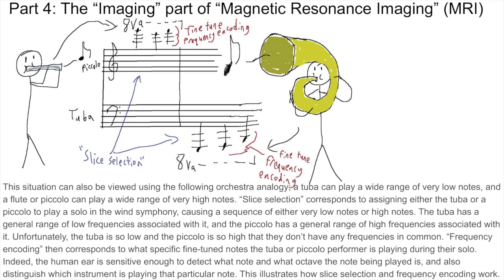This situation can also be viewed using the following orchestra analogy. A tuba can play a wide range of very low notes, and a flute or piccolo can play a wide range of very high notes. Slice selection corresponds to assigning either the tuba or a piccolo to play a solo in the wind symphony, causing a sequence of either very low notes or high notes. The tuba has a general range of low frequencies associated with it, and the piccolo has a general range of high frequencies associated with it — and they don't have any frequencies in common. Frequency encoding then corresponds to what specific fine-tuned notes the tuba or piccolo performer is playing during their solo, illustrating how slice selection and frequency encoding work.